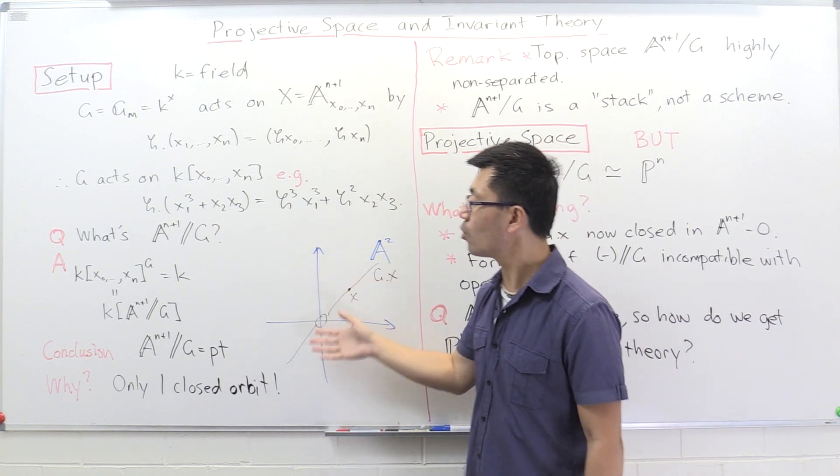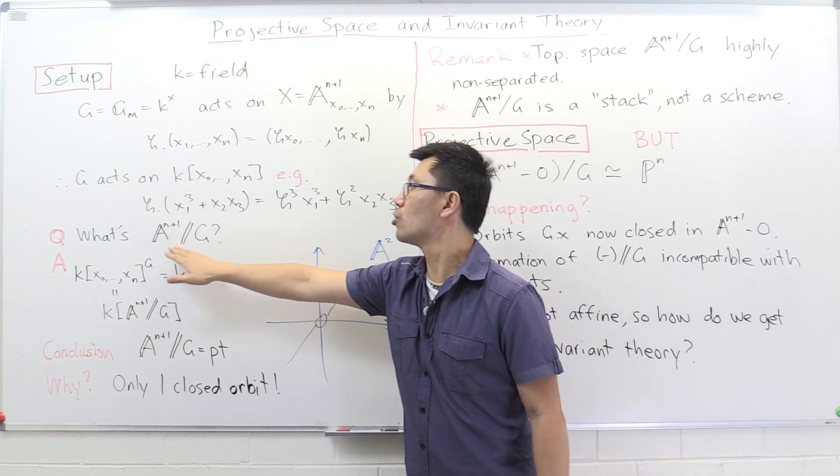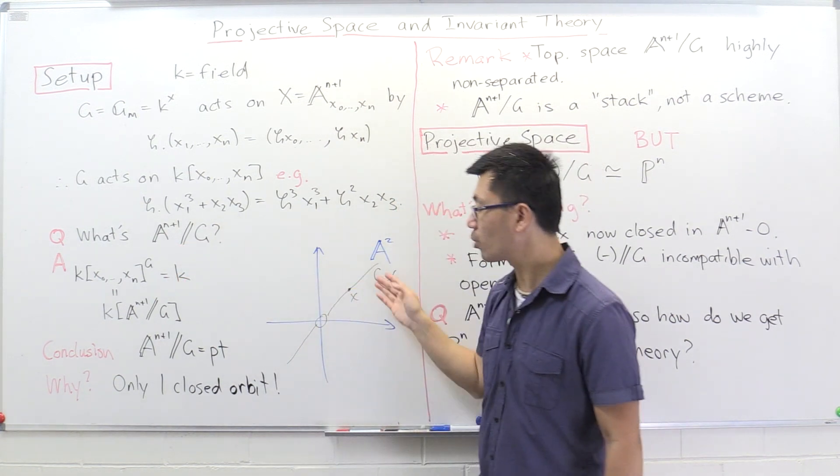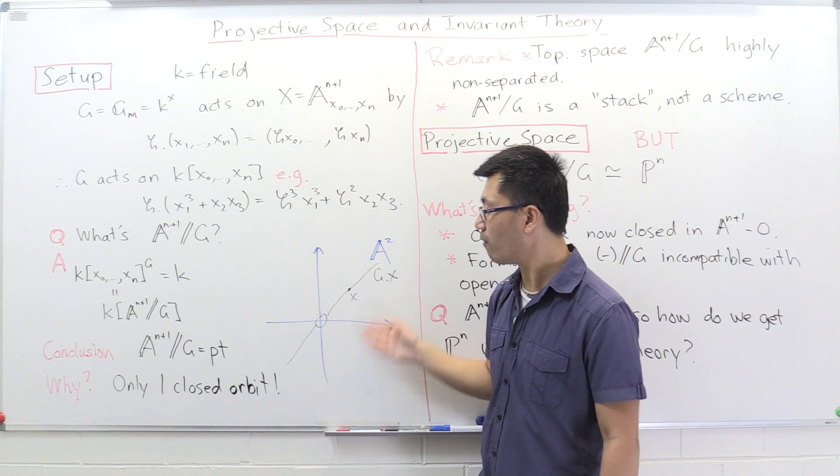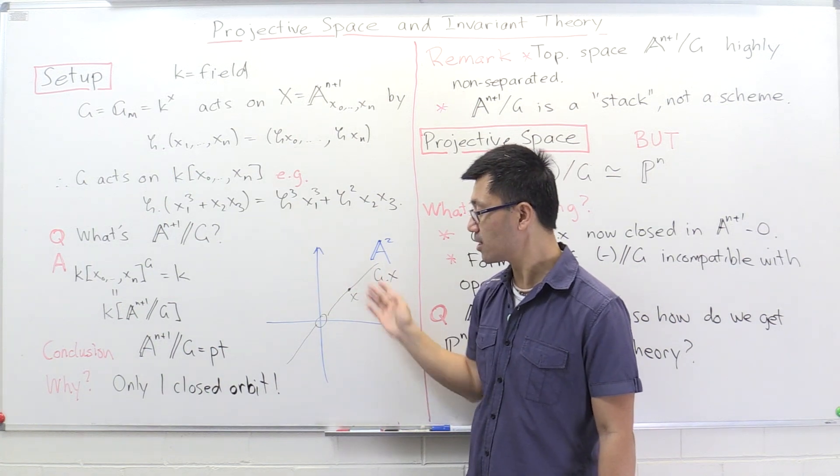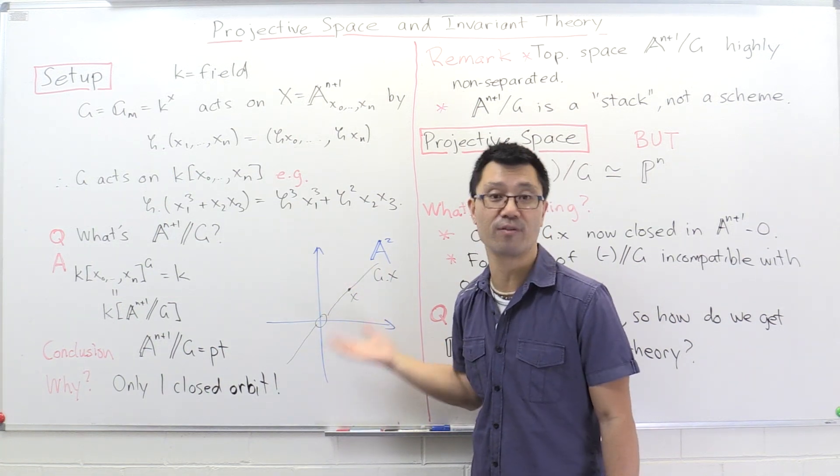The orbit of zero is just zero itself — that's the only closed orbit. All the other orbits are open, and their closures contain the orbit of zero. So when you map from A^{n+1} down to the quotient, all these open orbits have to be sent to where the closed orbit goes — everything collapses to a single point, which is not very interesting.